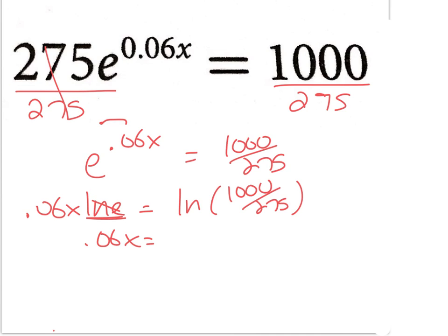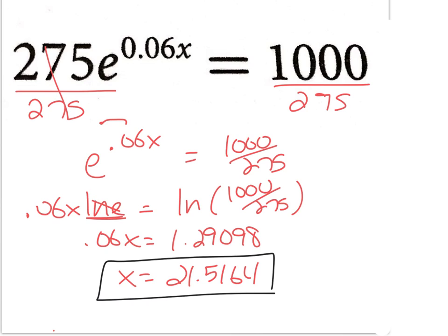Now I'm going to go ahead and take my calculator and punch in natural log of a thousand divided by 275, that'd be more accurate. I'm getting 1.29098. Now divide that by 0.06, divide by 0.06 on my calculator I get 21.5164, probably go about four decimal places for an answer today unless I tell you otherwise. That's it, you can check that on your calculator by plugging it back and see if it does actually work.